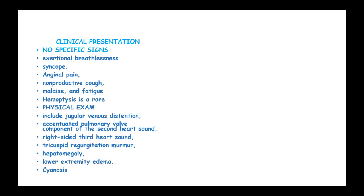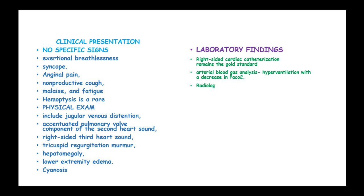Cyanosis can occur in severe cases. In the diagnostic approach, right-sided cardiac catheterization is the gold standard. Arterial blood gas analysis should be done and will show hyperventilation with decreased partial carbon dioxide pressure. CT scan will show enlarged pulmonary arteries, and echocardiography with Doppler shows an enlarged right ventricle.